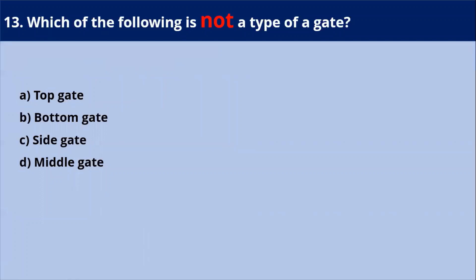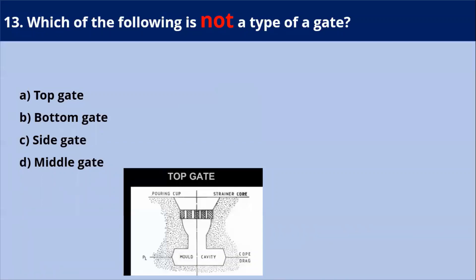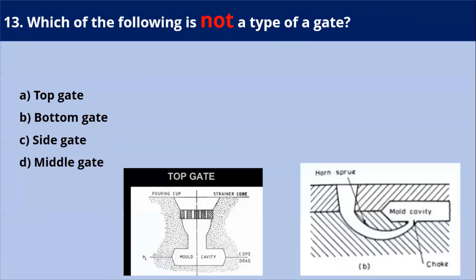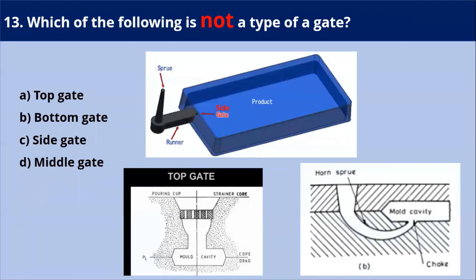Next question: which of the following is not a type of gate? As shown in this diagram, the top gate, bottom gate, and side gate are all types of gates. However, the middle gate is not a type of gate. Gates are classified into top, bottom, and side gate only. Our answer is — middle gate, because the question asks which is not a type.